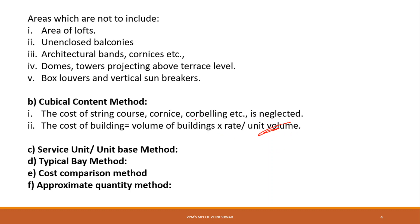You take a reference building from the locality, calculate its volume and cost, then divide cost by volume to get the rate per unit volume. Multiply that rate by your building's volume to get the cost. The volume of the building is obtained as length × breadth × depth (height), with all dimensions measured out-to-out of the walls, excluding the plinth offset.